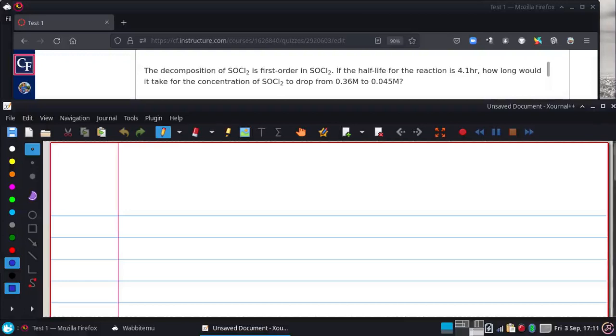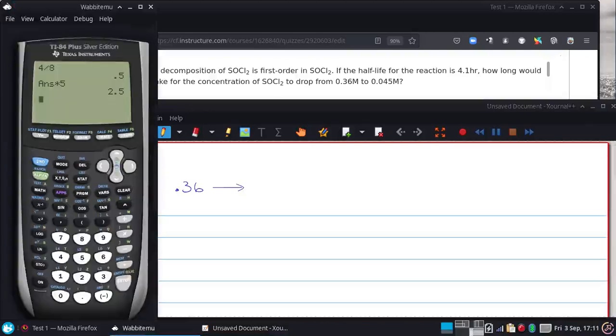Alright, I'm going to try to estimate this one first. So what I mean by estimate, I'm going to start with the concentration it gave, and I'm basically just going to cut it in half until I get to that 0.045. So we can do this on our calculator if we want to just be certain that we're right.